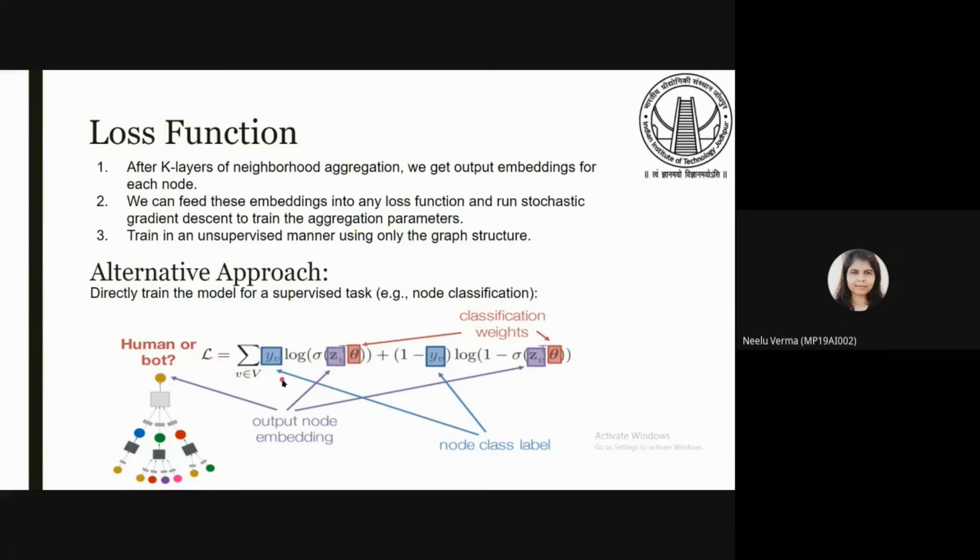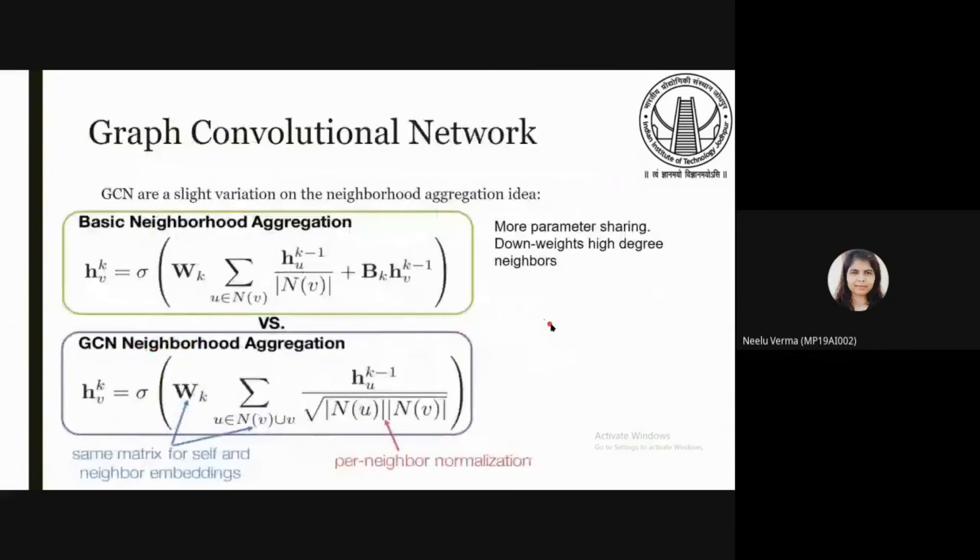This is the loss function in which Y of V is the node class label and Z of V is the output node embedding and theta is the classification weight. Graph convolutional network is a slight variation on the neighborhood aggregation idea where per-neighbor normalization is different. The result of which is more parameter sharing and it down-weights high degree neighborhoods.